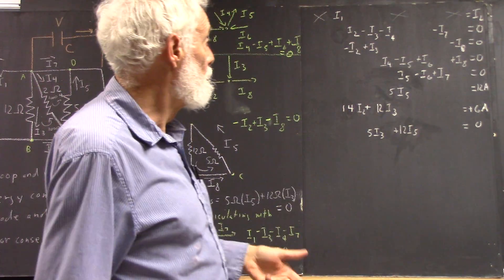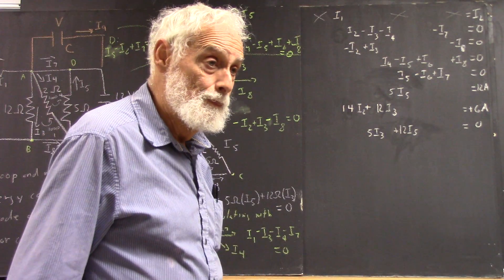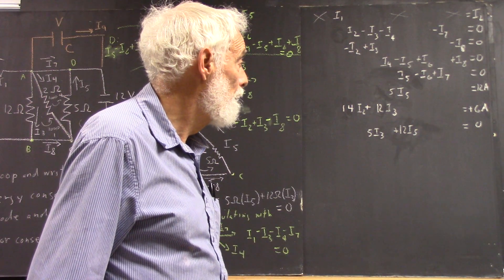Of course, you can do it by substitution. You know, solve this for I2 and substitute that. And so, you can solve for I5 pretty easily and then you can get I3 from there, right? And start going.